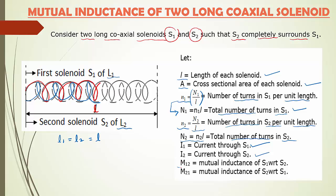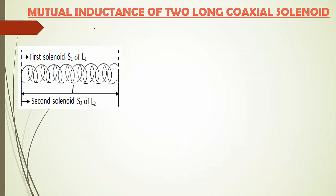M12 is the mutual inductance of S1 with respect to S2, and M21 is the mutual inductance of S2 with respect to S1. Understanding these terms first will help us easily derive the expression for mutual inductance of two long coaxial solenoids.